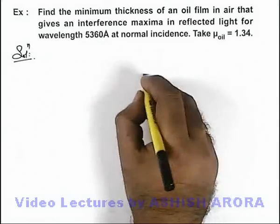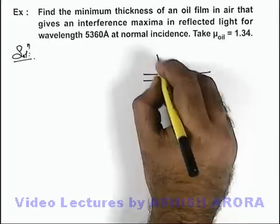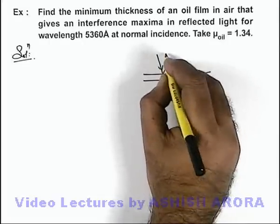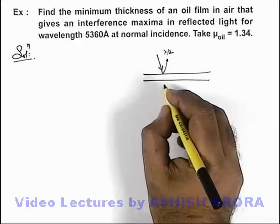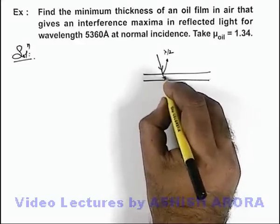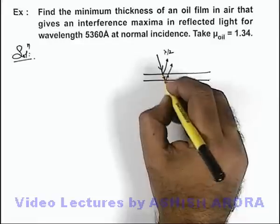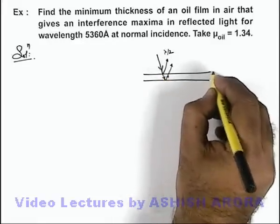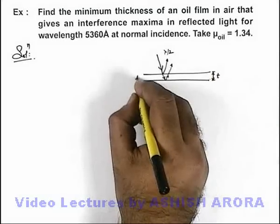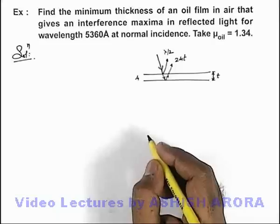In the solution for reflected light of a thin film, when light is incident, the first reflected beam has a path difference of λ/2 introduced due to reflection from a denser medium. For the second wave, it covers a distance equal to twice the thickness of the film. With refractive index μ, its equivalent path in air is 2μt.